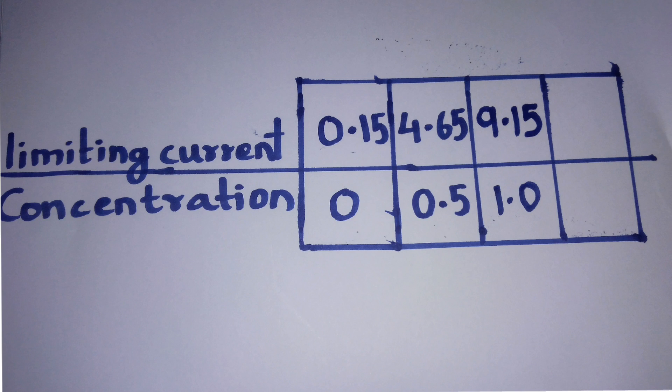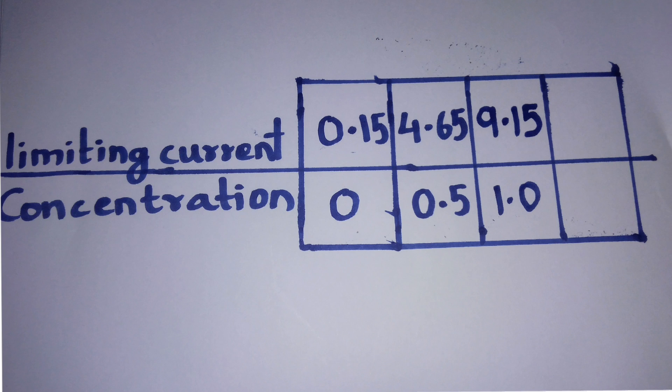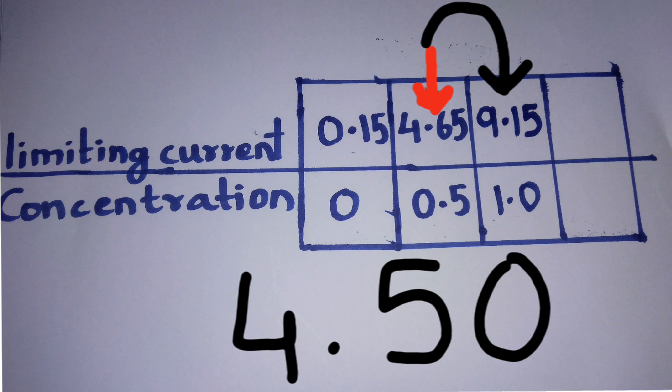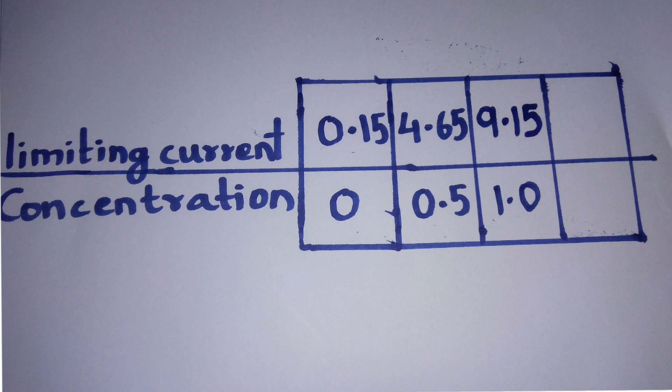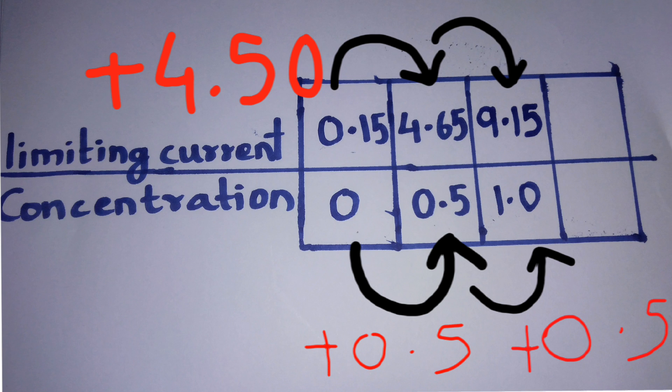When you carefully observe, the increase from this point to this point is 4.50. And from this point to this point, again it is 4.50. It clearly indicates when the concentration is increased by 0.5, the limiting current increases by 4.50.